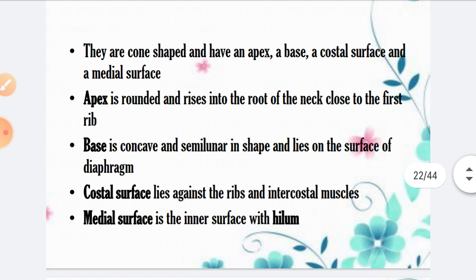The lungs are cone-shaped and have an apex, a base, a costal surface, and a medial surface. The upper portion is the apex, the lower portion is the base. The costal surface is the surface covered by the ribs anteriorly and posteriorly, and the medial surface faces the mediastinum, where the trachea and great vessels enter the lung.